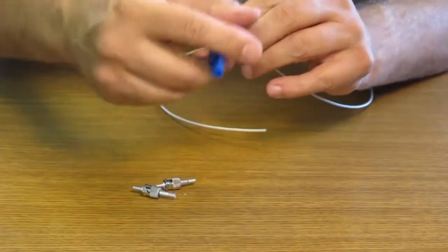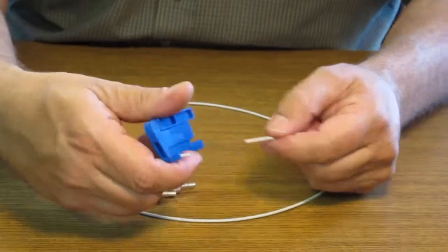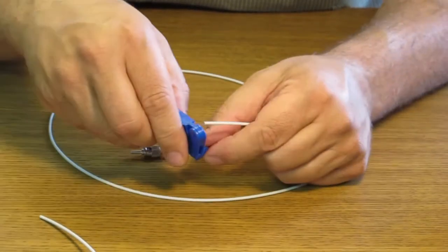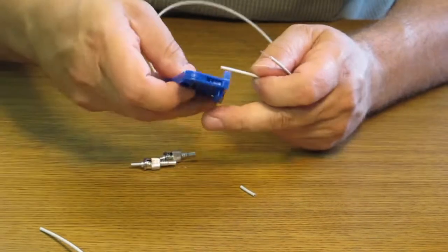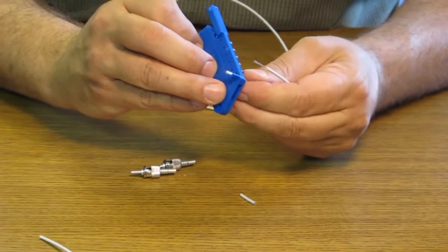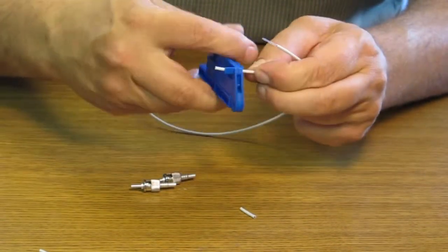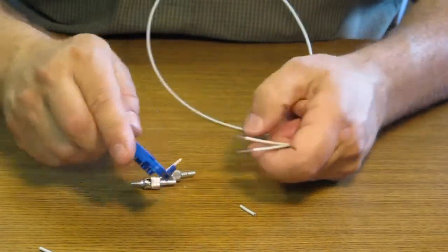So we're going to rotate the tool at least once around and then we're going to strip off the jacket from the cable. We want to do the same thing on the other side. Insert fiber, close the tool, rotate the tool, strip the jacket off.